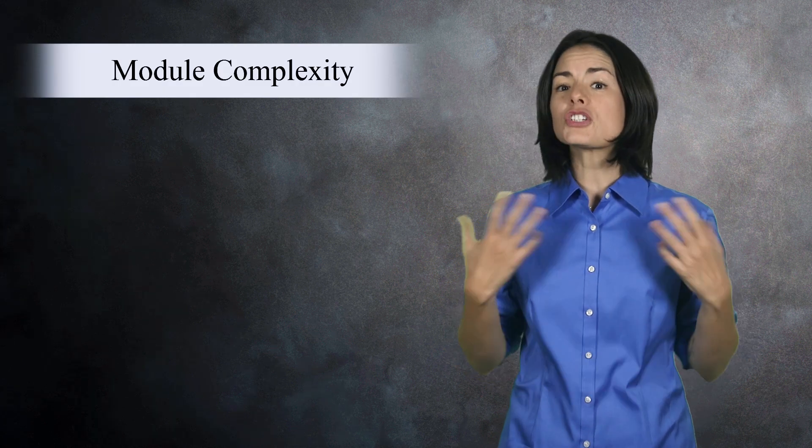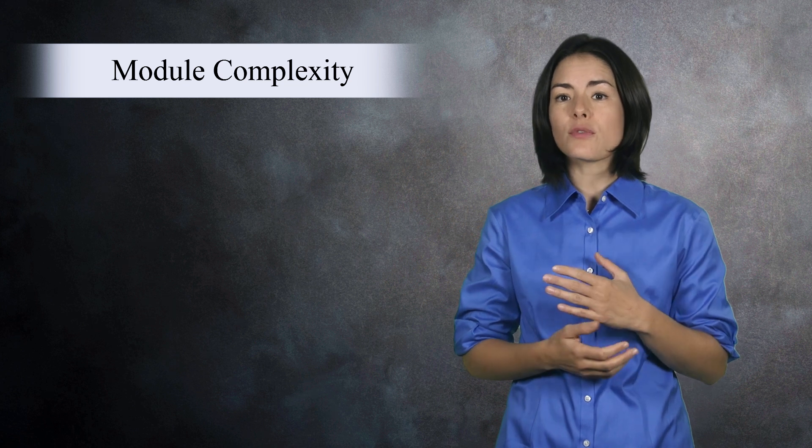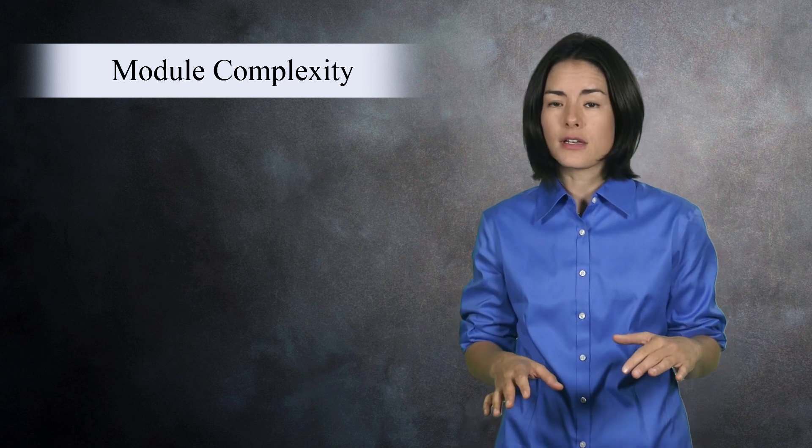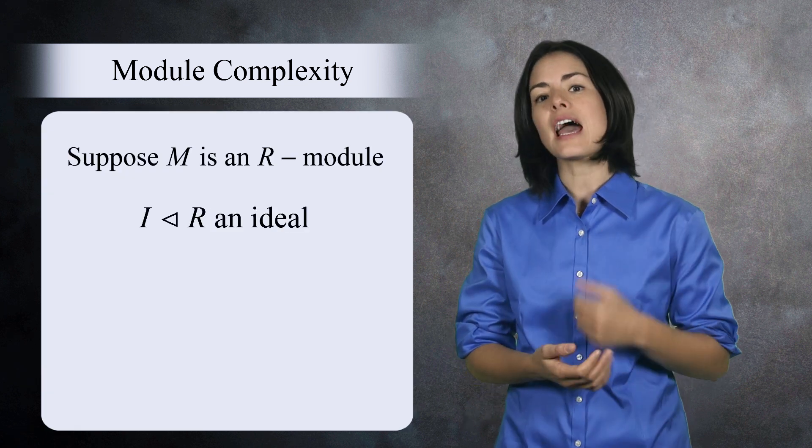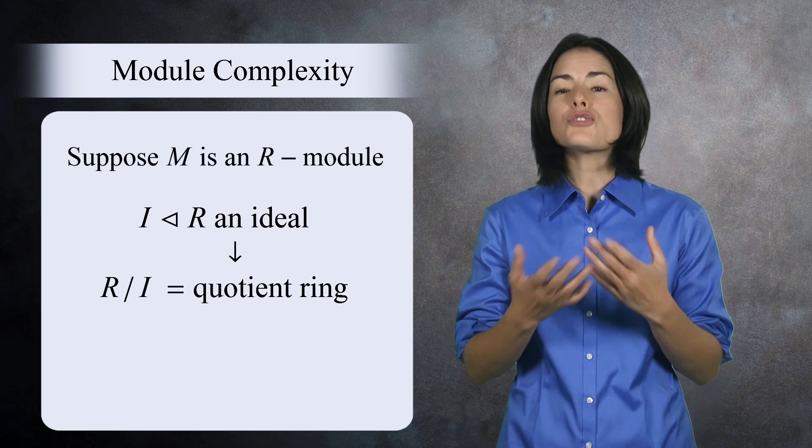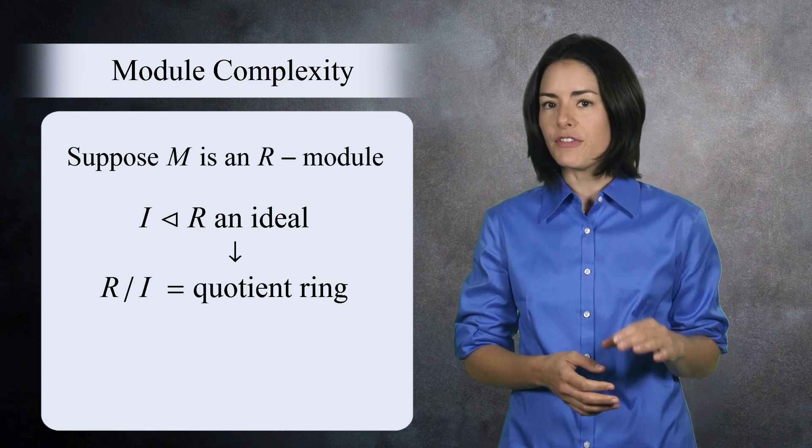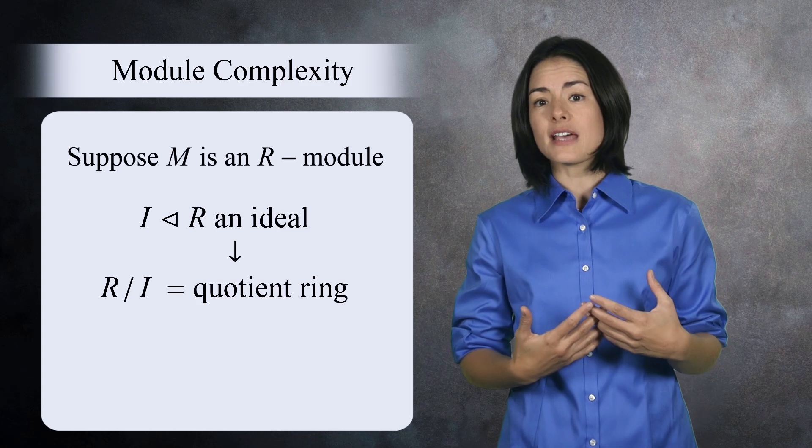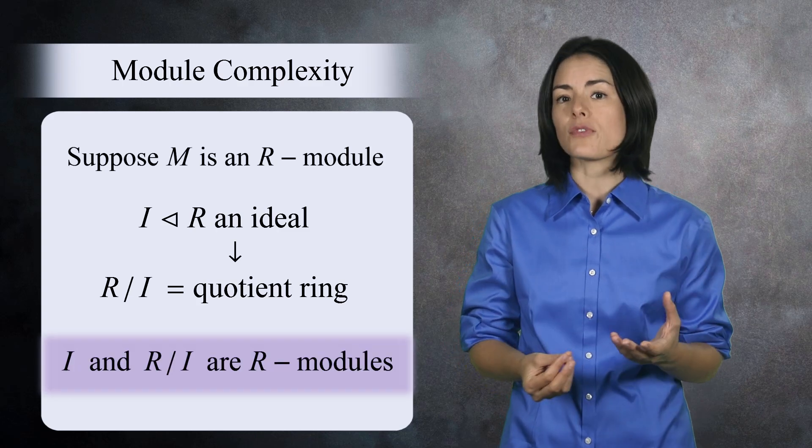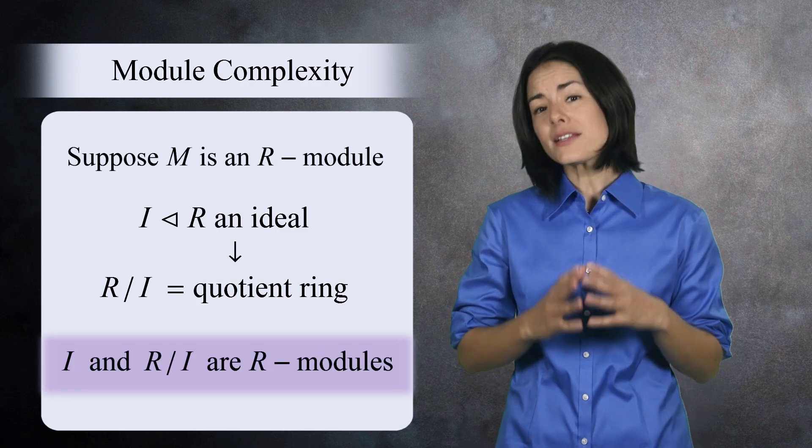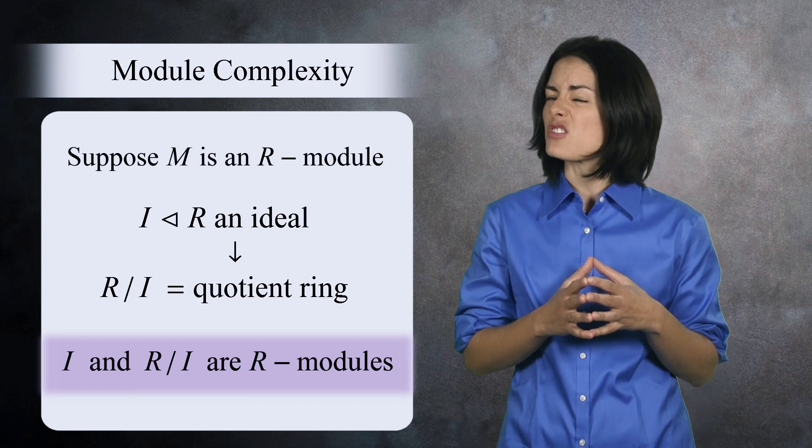Modules generalize the idea of a vector space. By allowing the scalars to come from a ring instead of a field, you get a more powerful tool, but the price you pay is a bit more complexity. This largely comes from the fact that you can do things with rings that you can't do with fields. For example, rings can have an ideal which allows you to make a quotient ring. This is something you cannot do with a field. And as we saw in our examples, you can use ideals and quotient rings to create modules which are quite different from the flatter world of vector spaces.